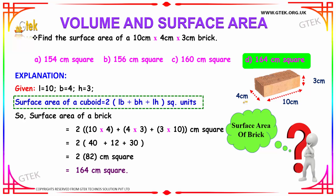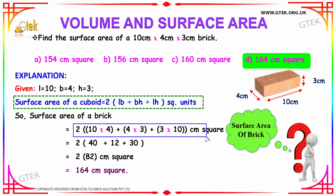Simply, we have to substitute our length, breadth and height into this formula. The equation will be: 2 into (10 into 4 + 4 into 3 + 3 into 10) cm². That gives us 10 into 4 is 40, 4 into 3 is 12 and 3 into 10 is 30.